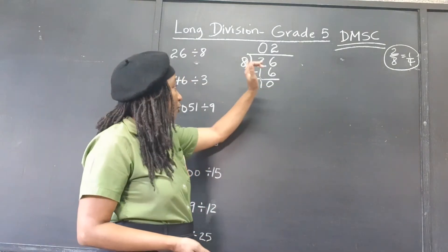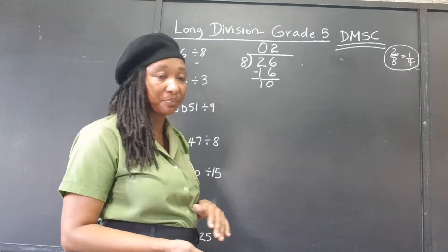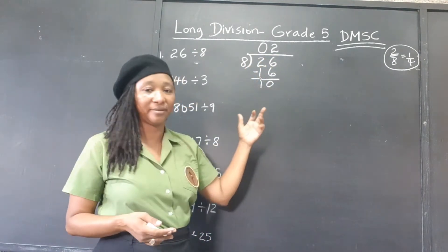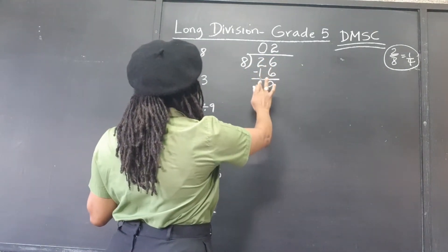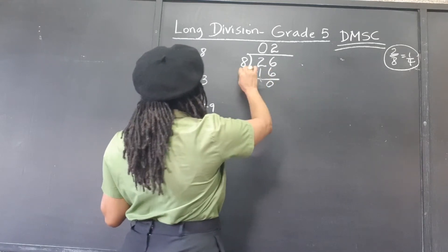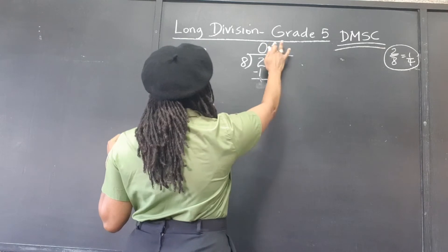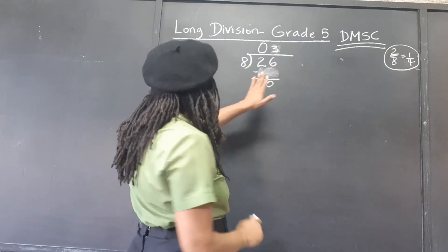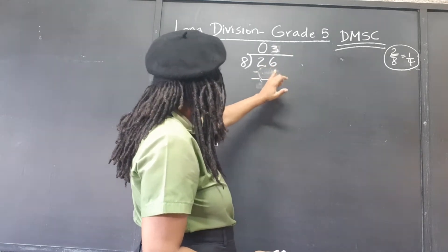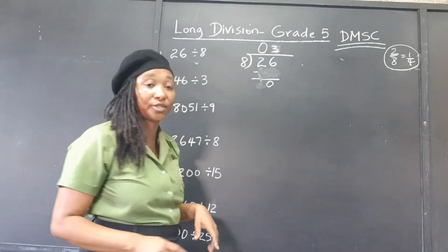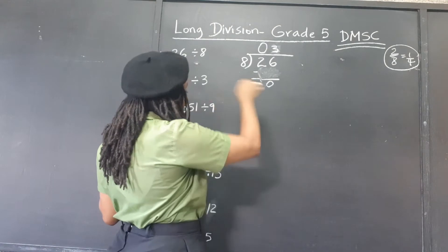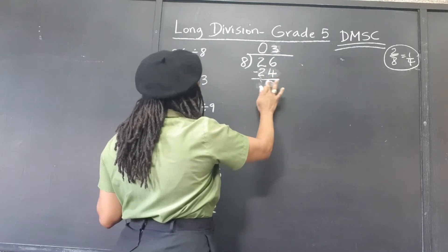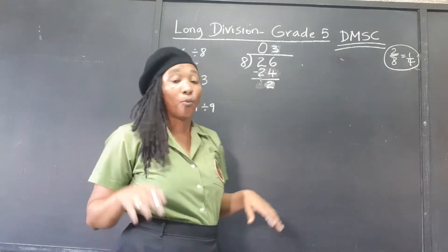Wait — 8 into 26 should be 3 times, not 2. That's an error. If you are dividing and you get a remainder that's bigger than the divisor, that means it could go in more times. So 16 was incorrect — 3 times 8 is 24, so the remainder is actually 2.